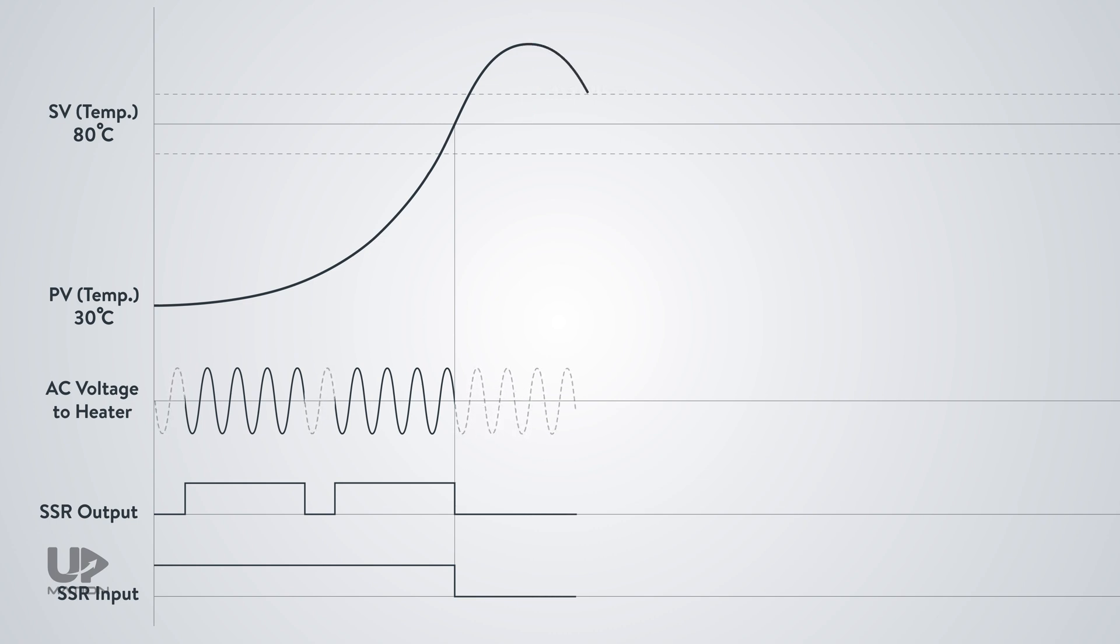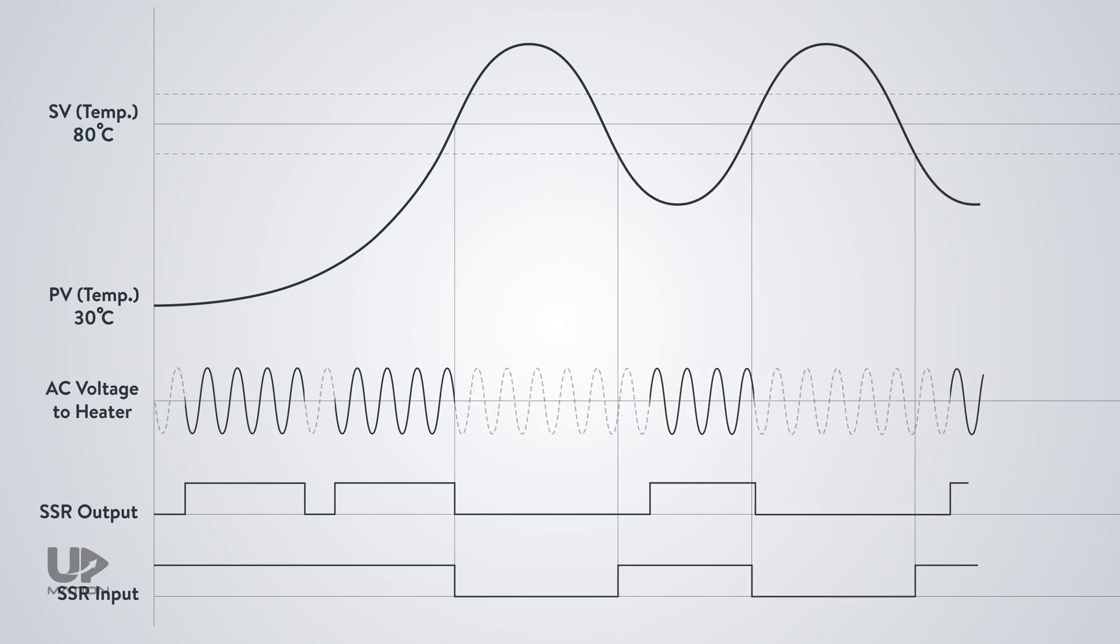So, after an overshoot, the temperature falls to the lower limit of the dead band. And again, the output of the controller turns on. And this will be repeated again and again. So, this way, we control the temperature around our desired set point.